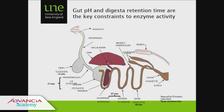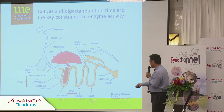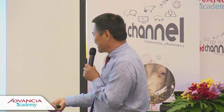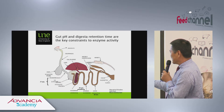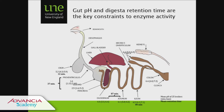Looking at gut pH and digestive retention time: in the crop, holding time is only 12 minutes at pH 4.3 to 5.9. In the proventriculus, 37 minutes with pH dropping to 1.6. In the small intestine, 87 minutes at pH 6.0 to 6.1. Jejunum, 80 minutes at pH 6.5. Cecum at around pH 6.4 on average. The chicken is an extremely efficient animal — within 270 minutes, a totally starch-based diet can be fully digested.